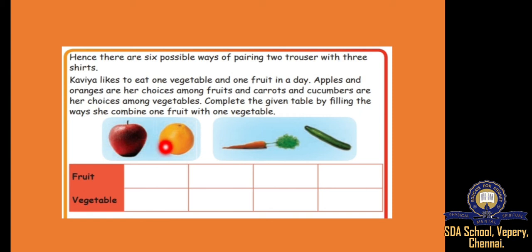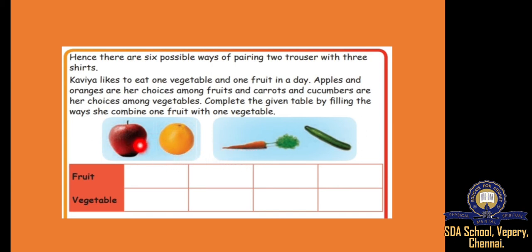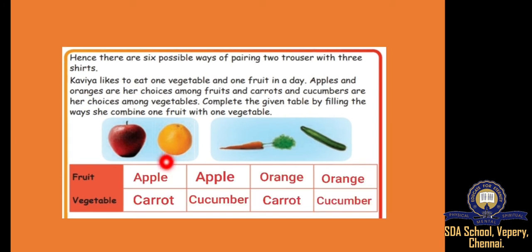Caviar is having one apple and one orange, and in the vegetable section she is having one carrot and one cucumber. She wants to combine daily — like daily she wants to eat one fruit and one vegetable. So she wants to eat one fruit and one vegetable on Monday, Tuesday, Wednesday, Thursday. How can she distribute this? First Monday she ate apple and carrot. Second day she ate apple and cucumber. Third day, orange carrot. Fourth day, orange cucumber. Understood, children?